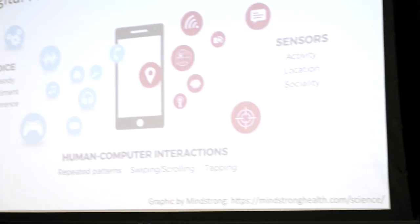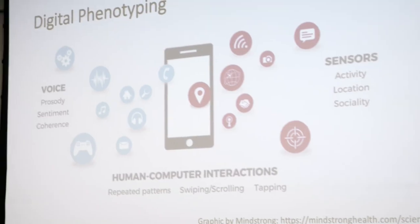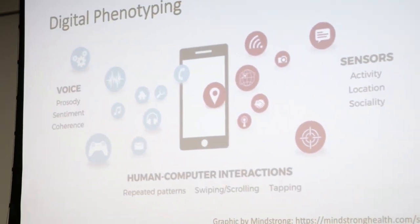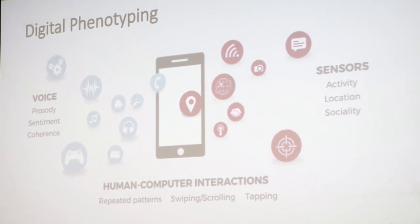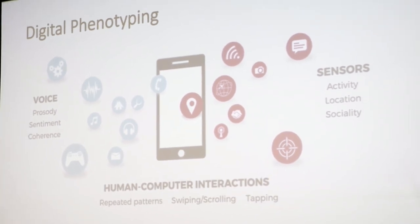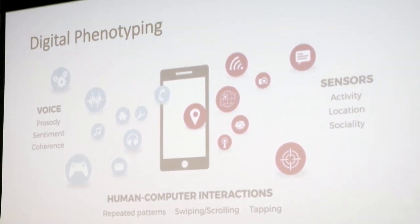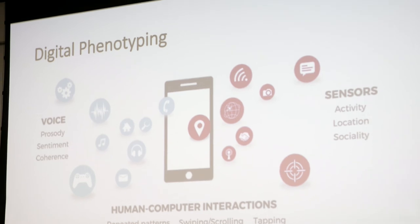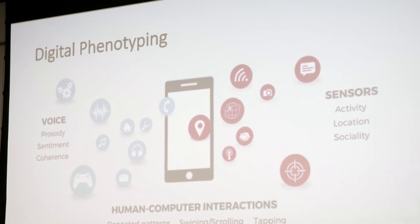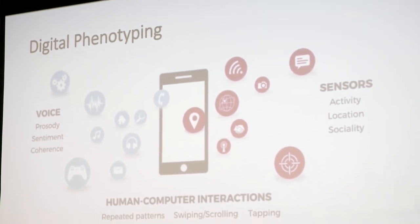That's what one group in the US called MindStrong is doing. They're doing an approach called digital phenotyping — the idea being: can we use our cell phones to diagnose and monitor psychiatric disorders? These devices that we carry with us all day long, typing and talking on, carry so much information about all of us.